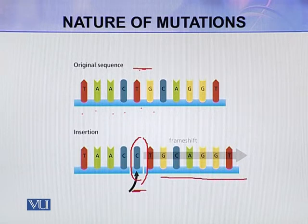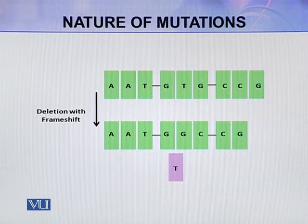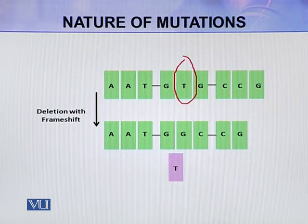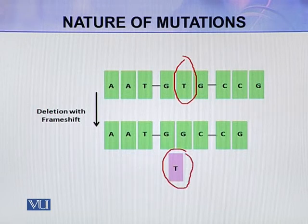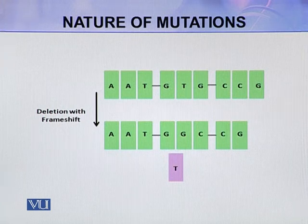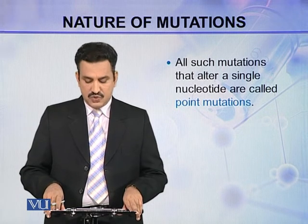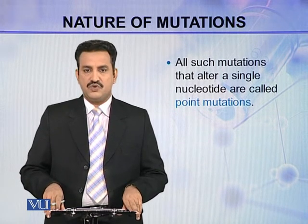This insertion will disrupt the entire gene where it has taken place. Similarly, this is a deletion. In this case, the T which was present in the original sequence has been deleted. By the deletion of this T, from that position onwards there will be a frameshift. These are called deletions or insertions. All such mutations that alter a single nucleotide are called point mutations.